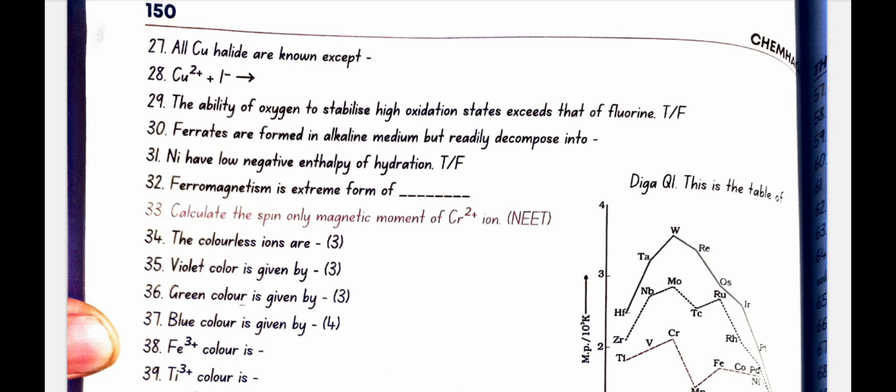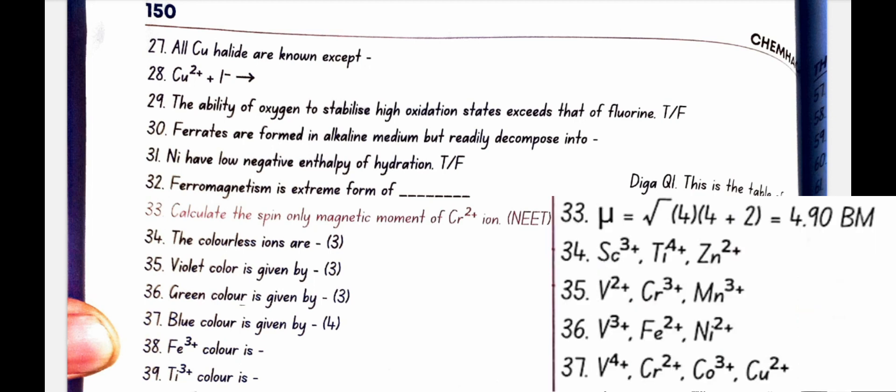Calculate the spin-only magnetic moment of Cr2 plus ion. So in Cr2 plus ion, there will be 4 unpaired electrons. Using the formula of magnetic moment as root of n times n plus 2 gives 4.9 BM.